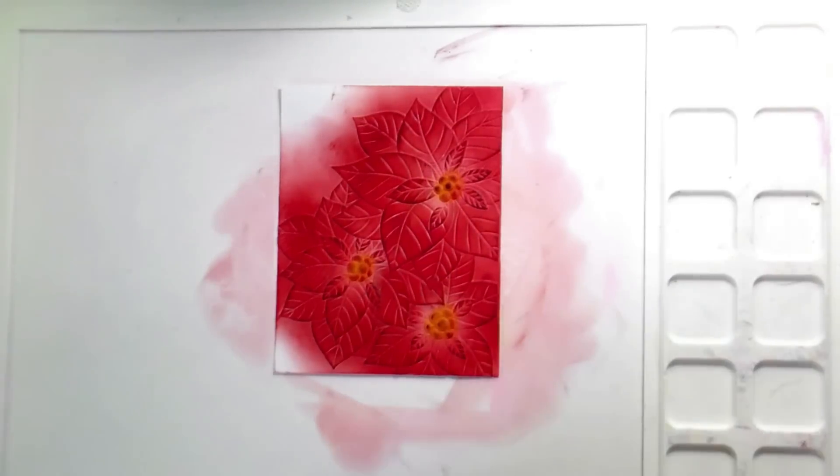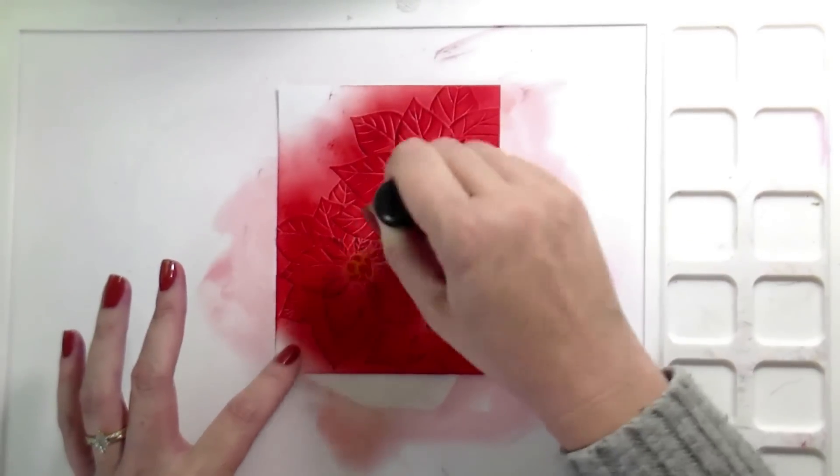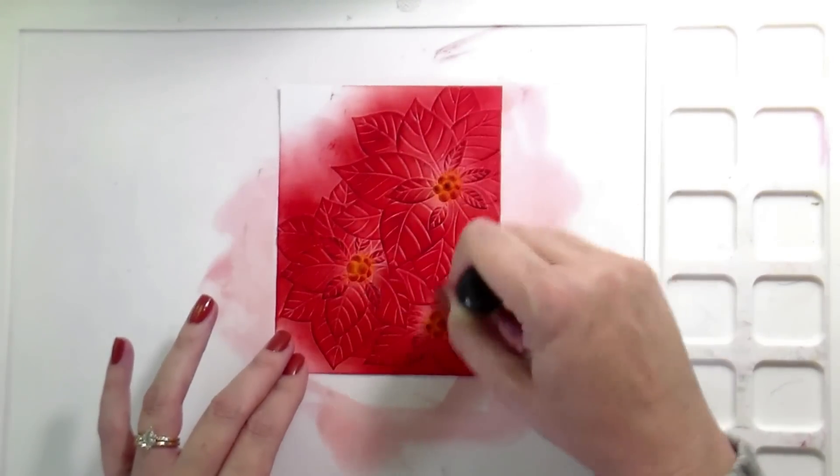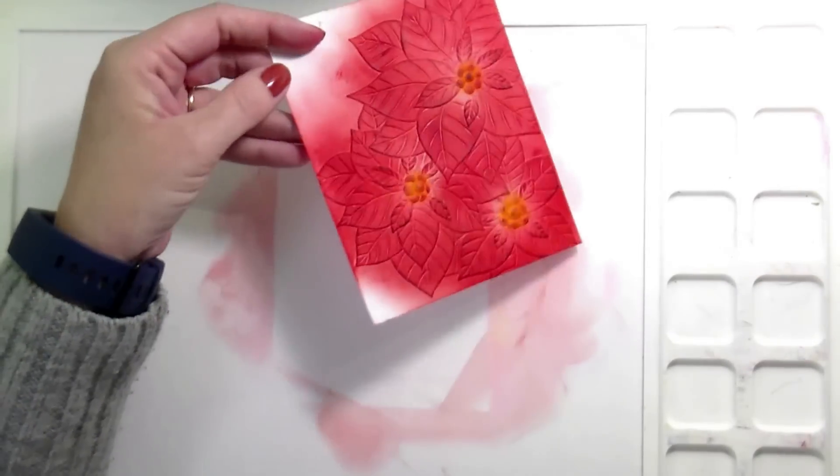So first I'm going to do it with this fossilized amber on just the centers. And you can see that it just hits the top, not in like the inside of the grooves. And then I'm going to go back in with that aged mahogany and do the same thing over the petals. I was much happier with that look. I felt like it gave it a lot more dimension. And then I did go back in and kind of just blend it out a little bit so it wasn't like this crazy dark spots. And I didn't have any issues with doing that.